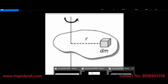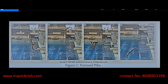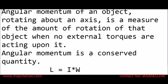Let me explain further with a small example. We have a diver making somersaults with different phases. In the first phase, the diver is ready to move from the board and is in angular momentum. Angular momentum plays a major role in describing moment of inertia. Angular momentum is a measure of the amount of rotation of an object when no external torques are acting upon it.